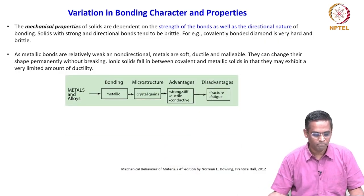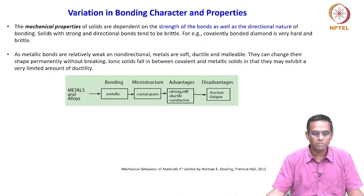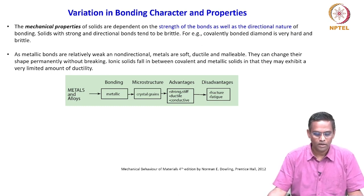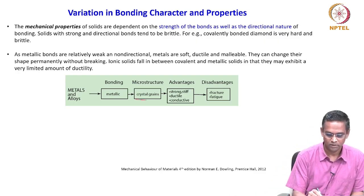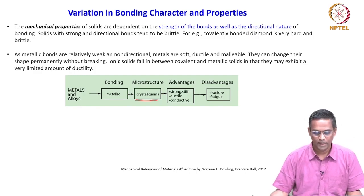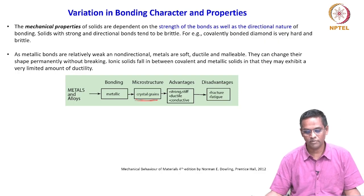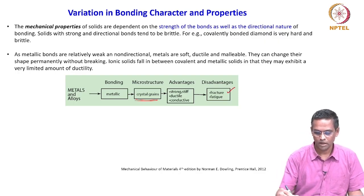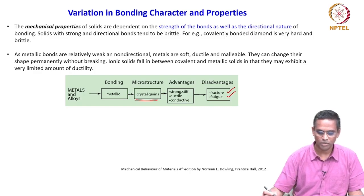Taking metals and alloys as an example: they exhibit metallic bonding and most are polycrystalline, consisting of crystal grains in their microstructure. Advantages include being very strong, stiff, ductile, and conductive. Disadvantages include potentially poor fracture and fatigue properties, which could be a limitation.